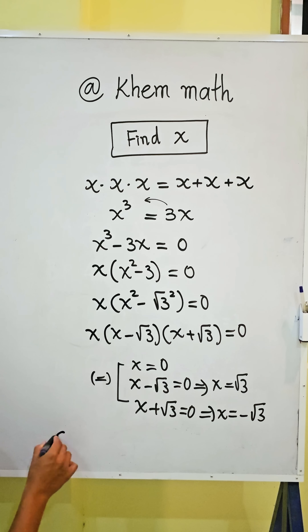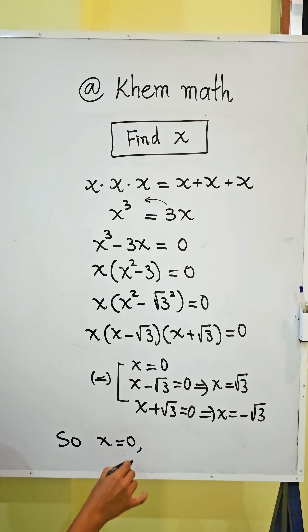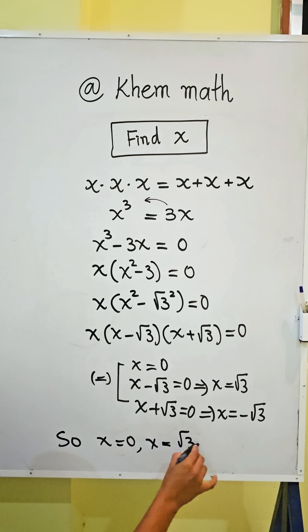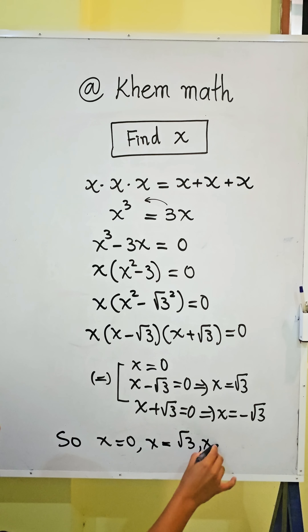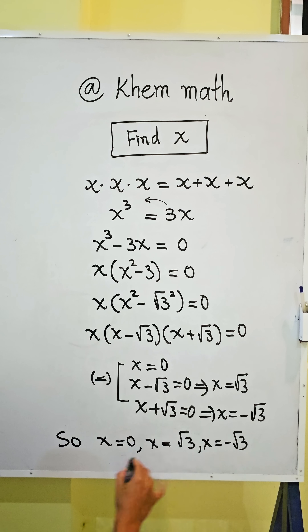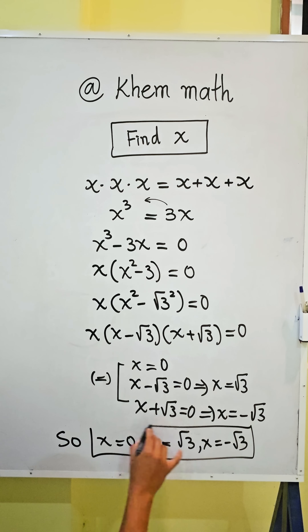So our answers are: x equals 0, x equals square root 3, and x equals negative square root 3.